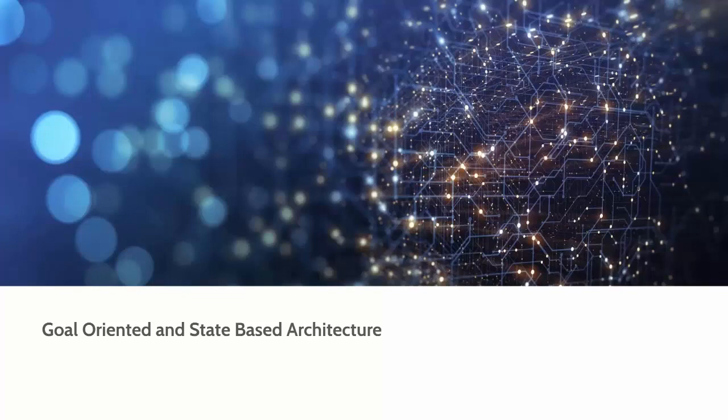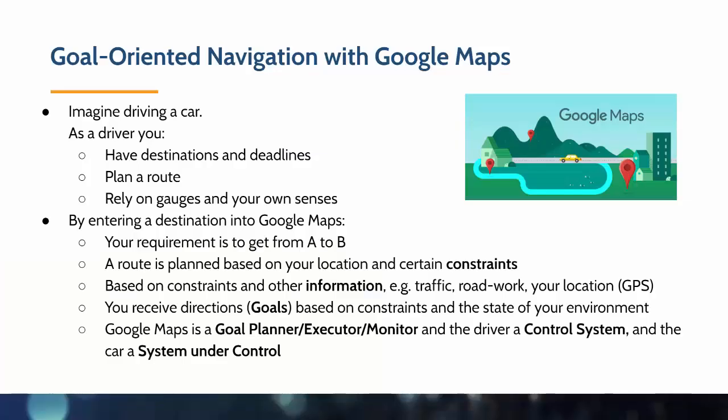Let's look at the goal-oriented and state-based architecture. The analogy we draw here is with Google Maps. Imagine you're driving a car with some destinations and deadlines. You plan a route to get from A to B, relying on gauges and your own senses. By entering a destination into Google Maps, you formulate a requirement to get from A to B, and the route is planned based on your location and constraints such as traffic, road work, and your actual location. You receive goals based on those constraints and the state of your environment. Google Maps acts as a goal planner, the driver becomes the control system, and the car is the system under control.